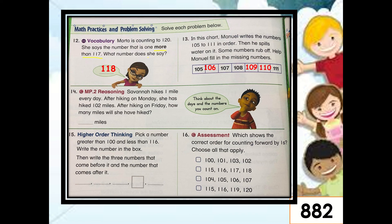How about number 14? Savannah hikes 1 mile every day. After hiking on Monday, she has hiked 102 miles. After hiking on Friday, how many miles will she have hiked? Remember this clue. One mile per day. So, after Monday, she has hiked 102. So, after Friday, how many miles do you think? Who can give me an answer? Okay. The correct answer is 106. Because from Monday, it's 102. Then you have Tuesday, Wednesday, Thursday, and Friday. So, four more miles. So, 102, 103, 104, 105, and 106. Very good.